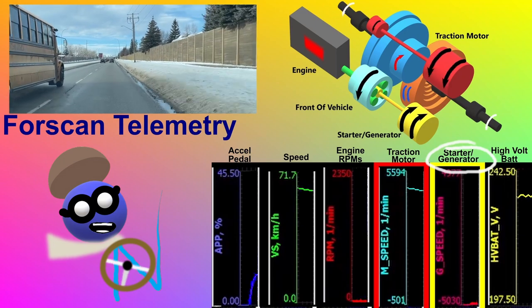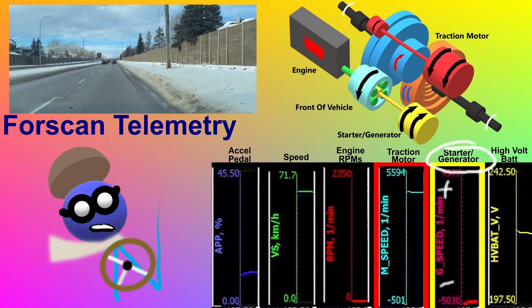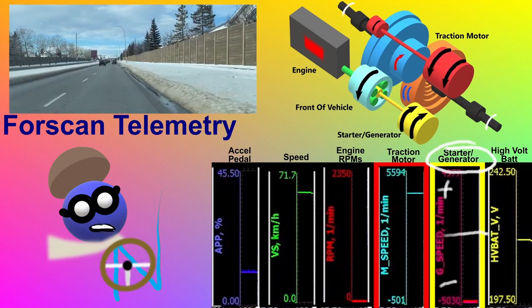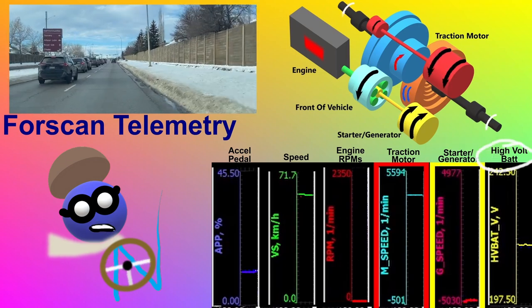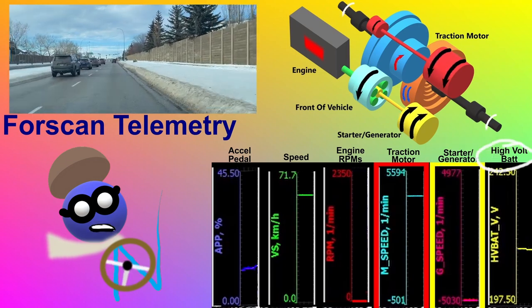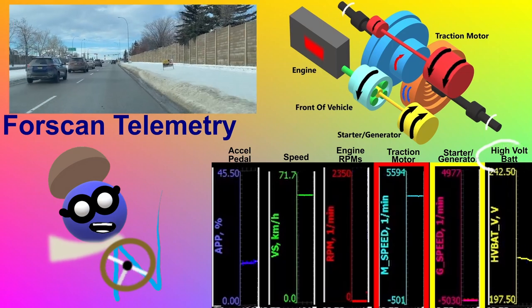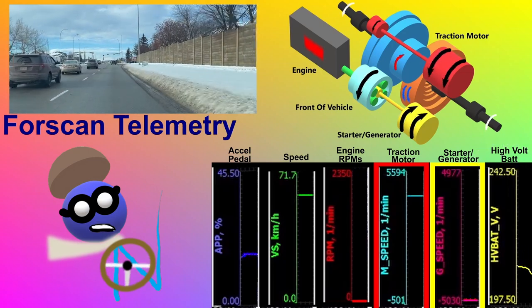The starter generator spins in the positive direction or the negative direction. About the middle of the scale is zero rpms. Finally, the high voltage battery is shown. For this exercise, it tracks between about 191 volts and 242 volts.